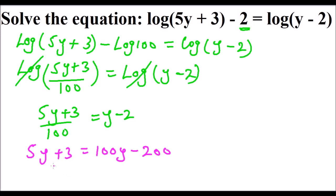So we put the right terms together. We have 100y minus, we take y to the other side, minus 5y equals 200 plus 3.